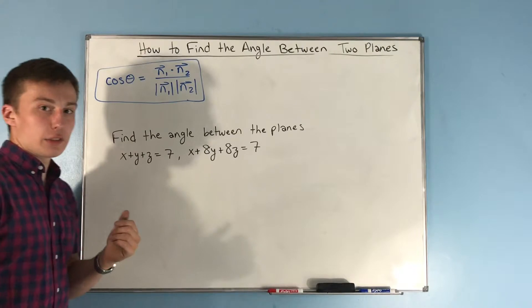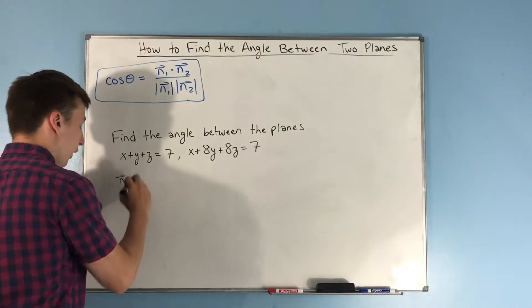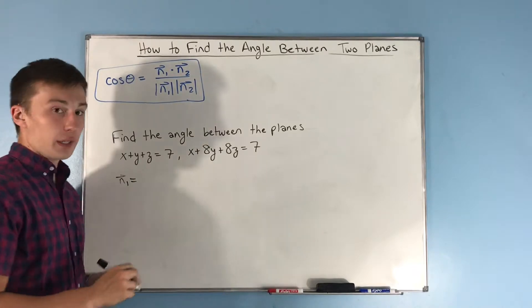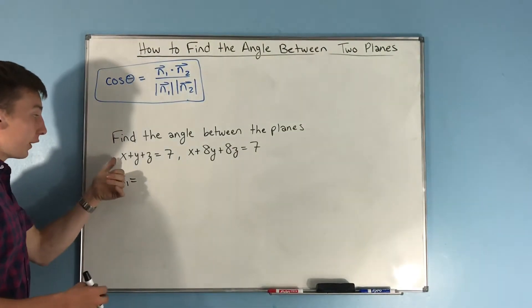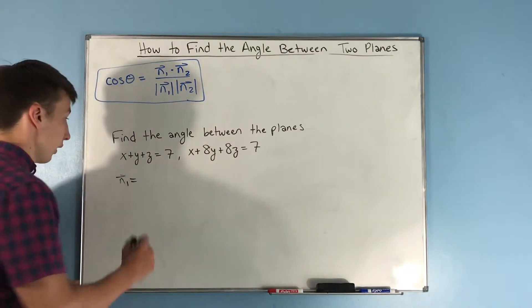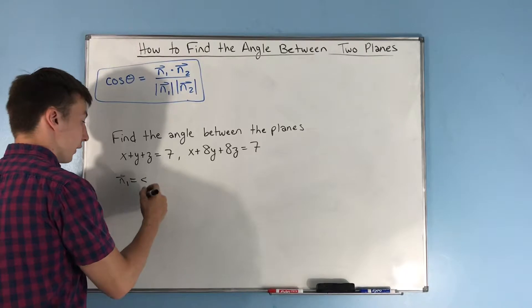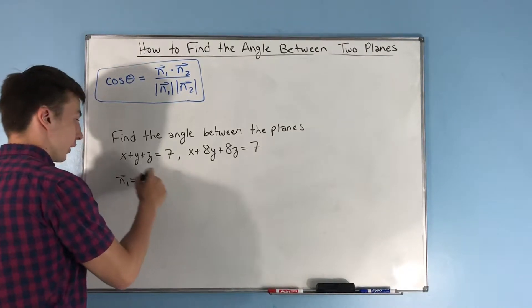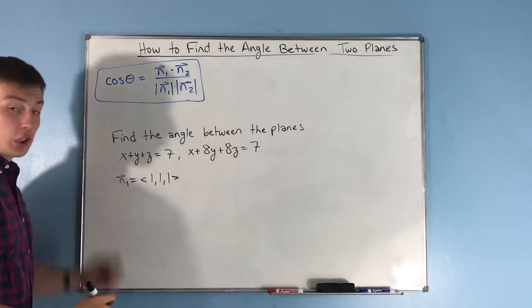Now, we're using normal vectors for this. And we know that the first normal vector, let's say n1, it's going to be the normal vector of this plane right here. Now, the normal vector is determined by just the coefficients on x, y, and z. The coefficient on x is 1, coefficient on y is 1, coefficient on z is 1. That's your first normal vector.